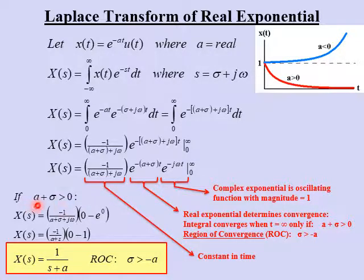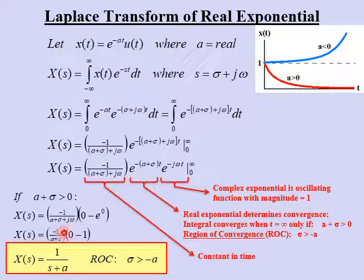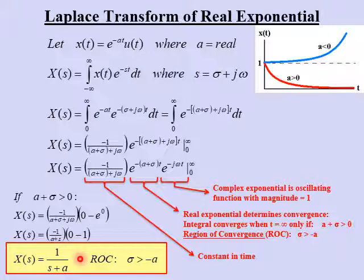Assuming sigma is greater than negative a, we can evaluate the integral. Plugging in t equals infinity, the first term goes to zero. Plugging in t equals zero gives e to the zero, which is one. So we get zero minus negative one, which cancels the minus sign. Noting that sigma plus j omega is just s, we substitute s back in. The Laplace Transform x of s simplifies to one over s plus a, with region of convergence sigma greater than minus a.